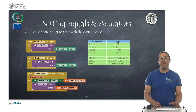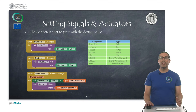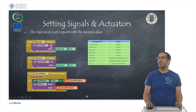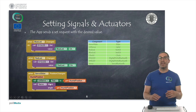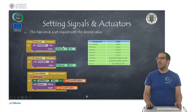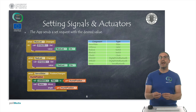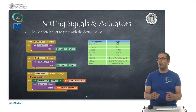We also have actuators, or signals we can write to. The procedure is similar for all of them. There are methods such as a set method for signals or a move method for a servo, with which we can send a value or data to the electronics. The electronics then need to set the proper signal value, or put the servo at the proper angle.